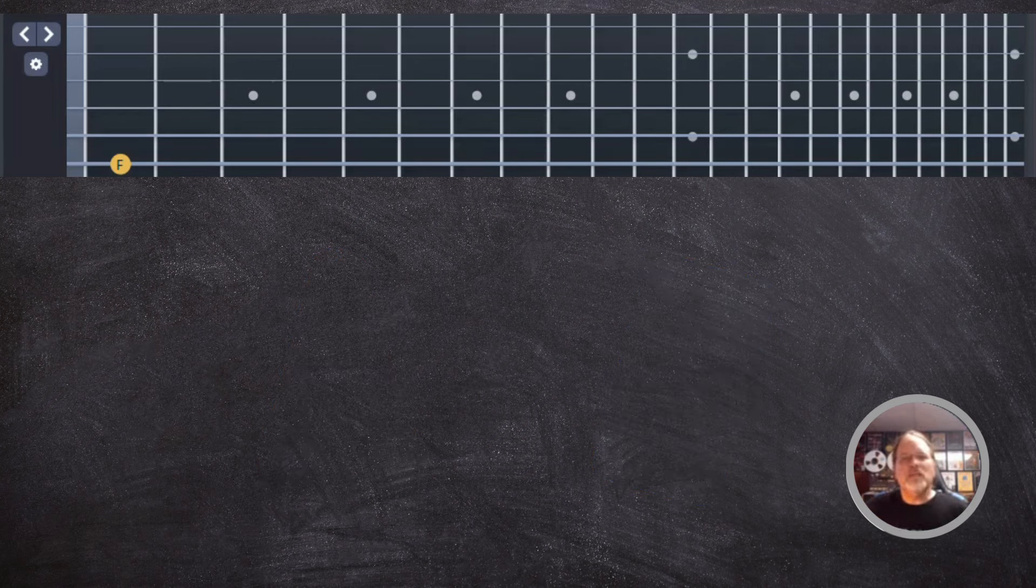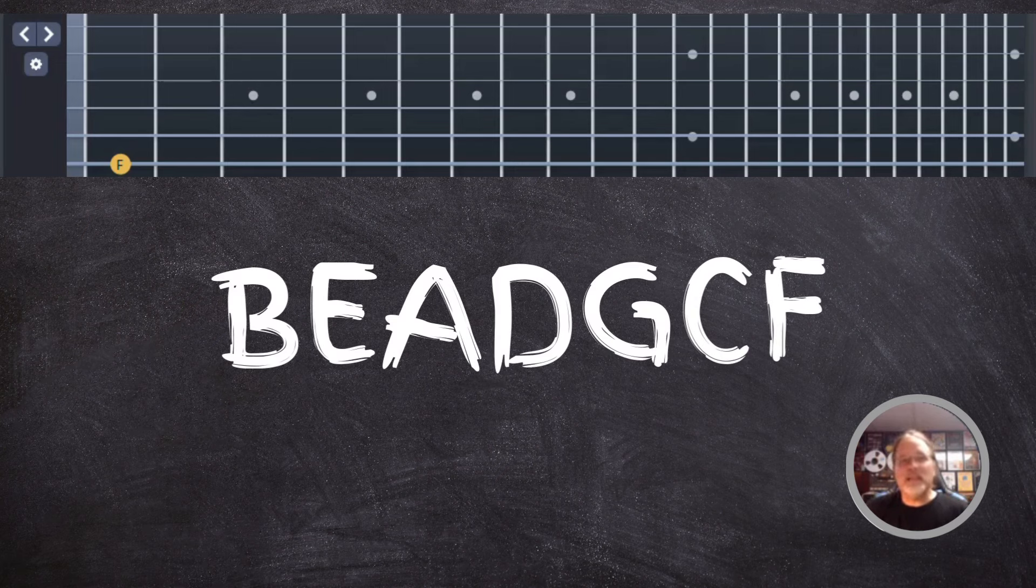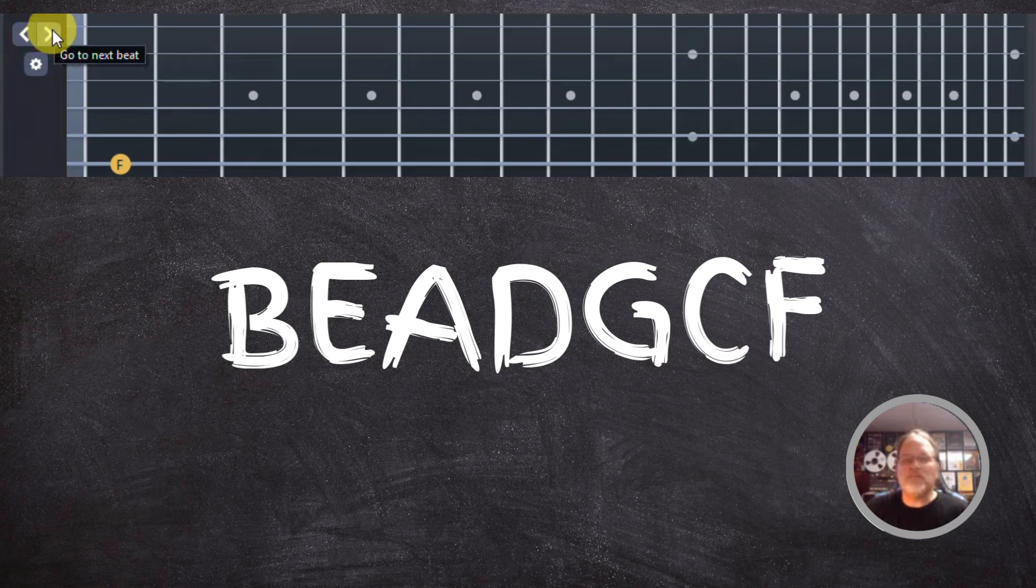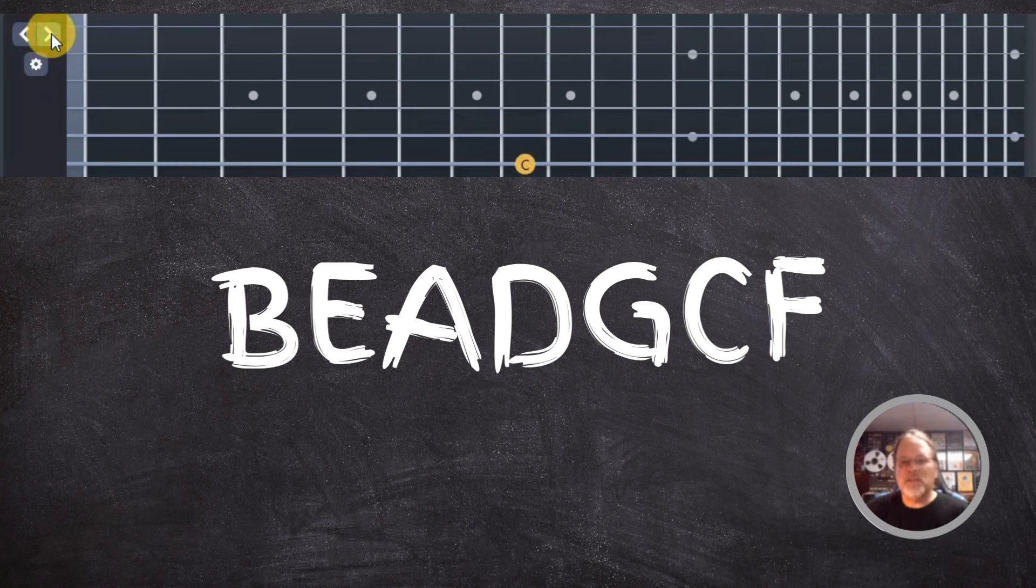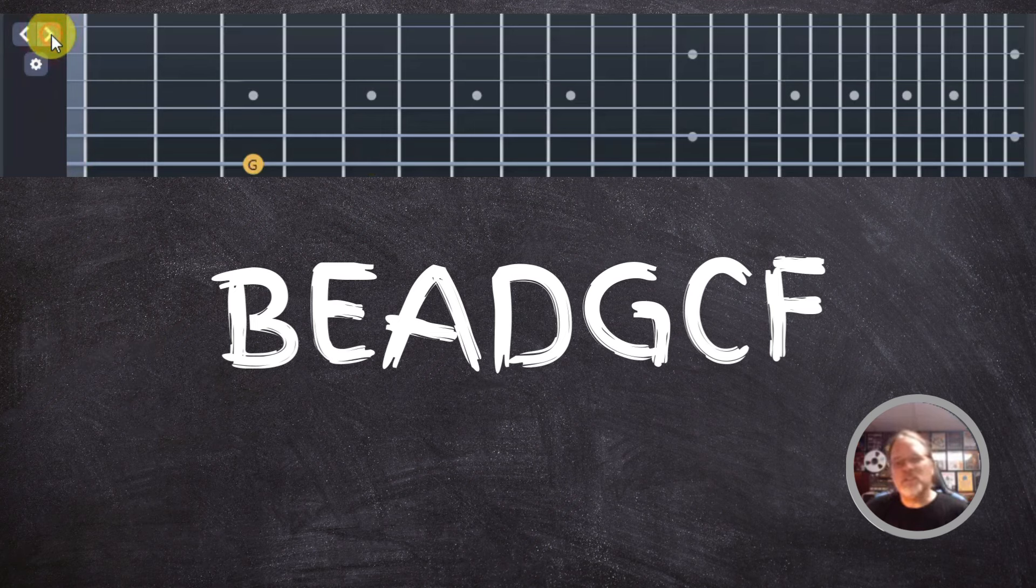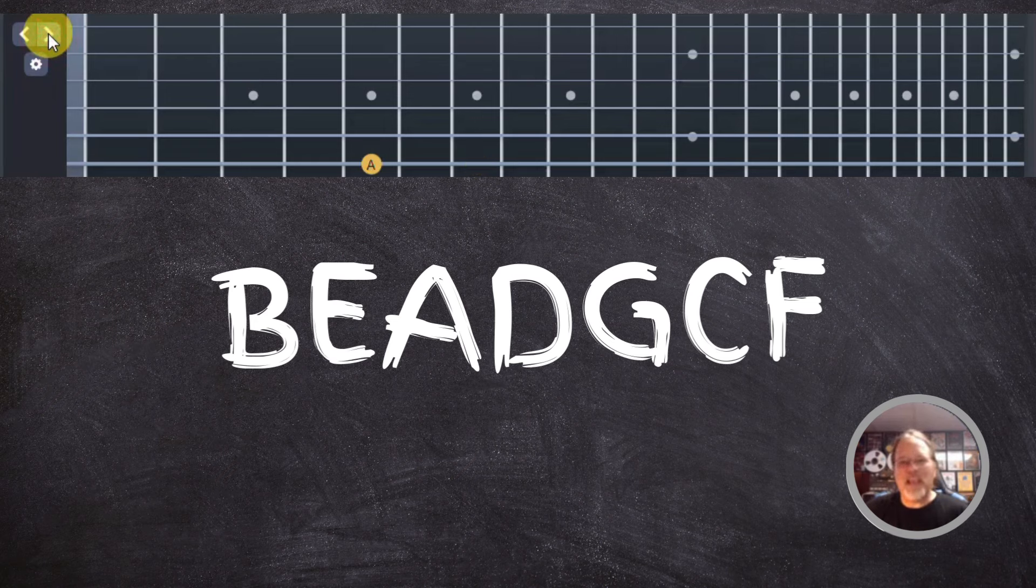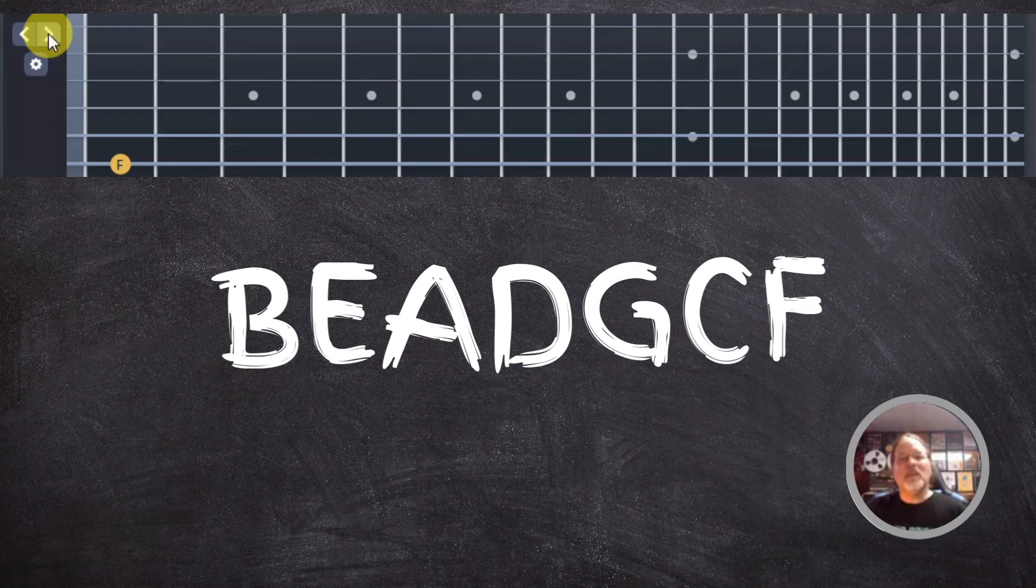So the final thing here is we're going to put it all together. So you want to find B E A D G C F. Again, you just start by just finding them at first. Don't worry about the backing track, just go through it. Okay, B E A D G C F. And then you're just going to keep repeating that: B E A D G C F. And then remember that's two beats, so B E A D G C F, B E A D G C F, and so forth. You just kind of repeat that over and over again.